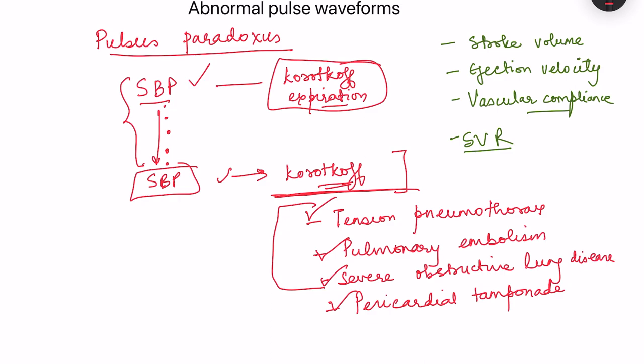In summary, the pulse waveform is normally assessed at the carotid artery, except for pulsus bisferiens which is better felt at the femoral and brachial arteries. Understanding the physiological abnormalities — changes in stroke volume, ejection velocity, vascular compliance, and peripheral resistance — explains the various abnormal pulse waveforms discussed.